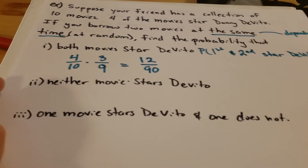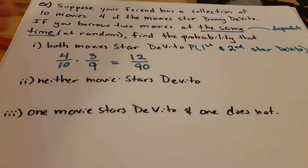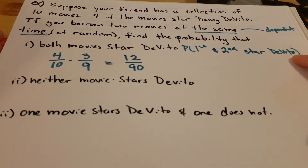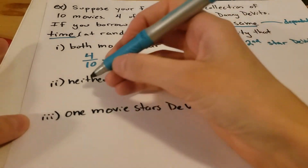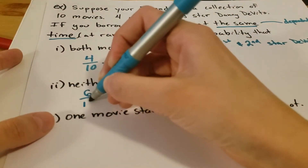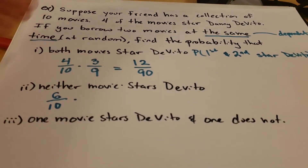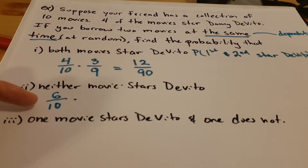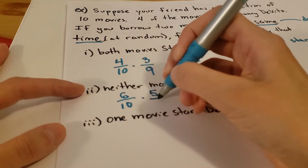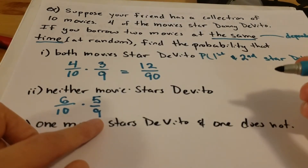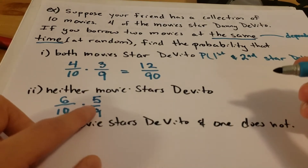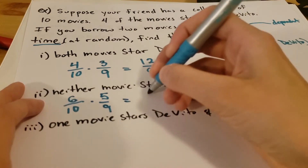If we want the probability that neither movie stars Danny DeVito, it's pretty much the same approach, except we look at the probability the first one doesn't star him and then the second one doesn't. The probability the first movie doesn't star Danny DeVito is six out of ten, because he's in four of the ten movies so he's not in the other six. The probability he's not in the second movie is five out of nine — we removed one non-DeVito movie, so now there are five of them out of nine remaining. This works out to be 30 over 90.